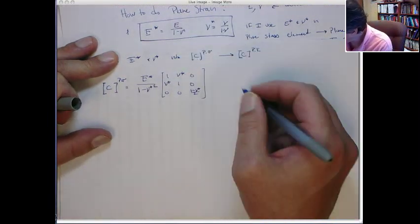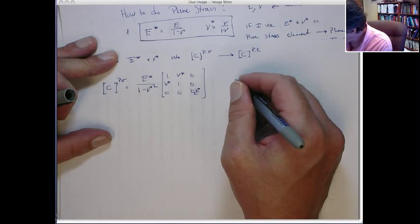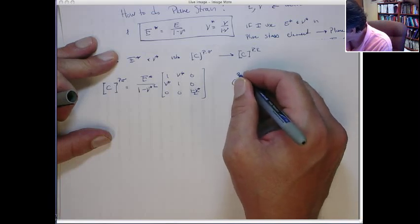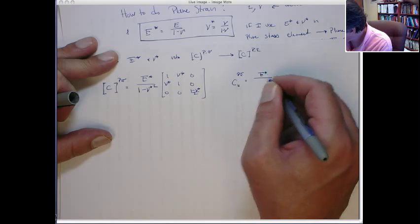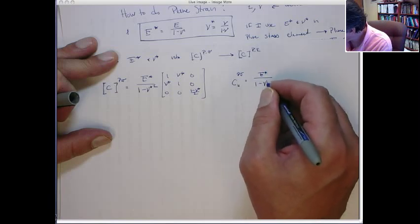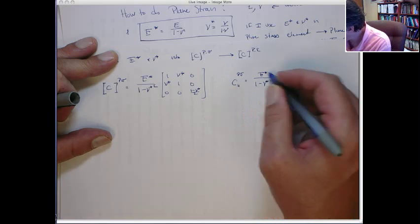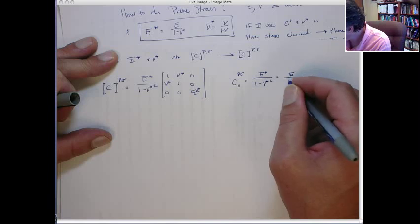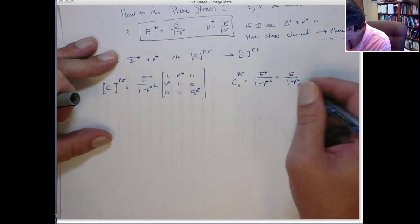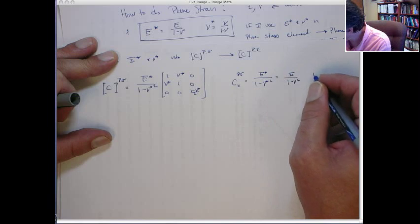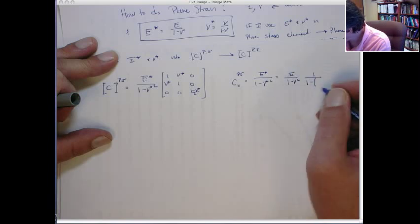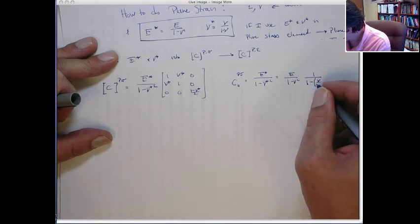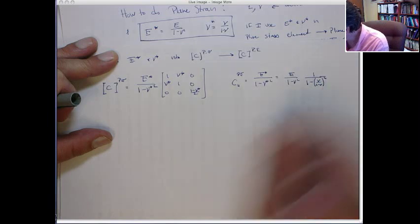And so the first term, like the C1,1 term for the plane stress, that's going to equal E* over 1 minus ν* squared. So putting the definitions, E* is just E times 1 minus ν squared, and then ν*, well, let's do this as 1 over 1 minus the quantity ν over 1 minus ν squared.